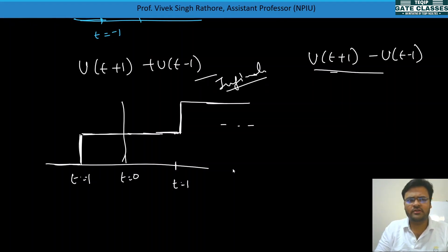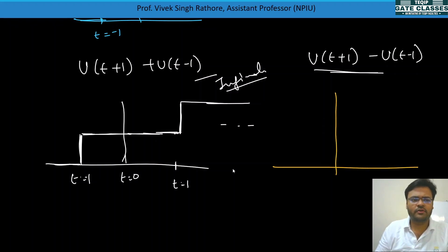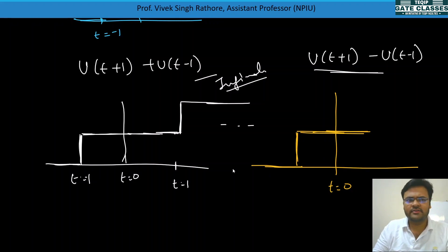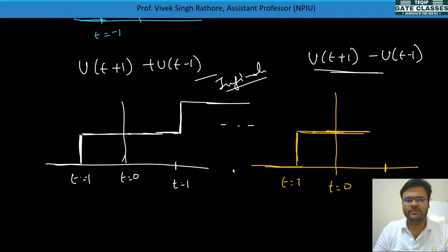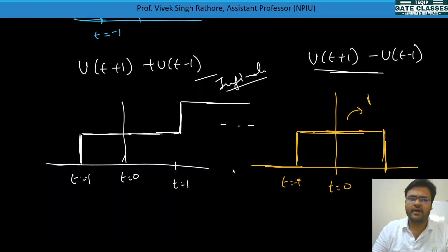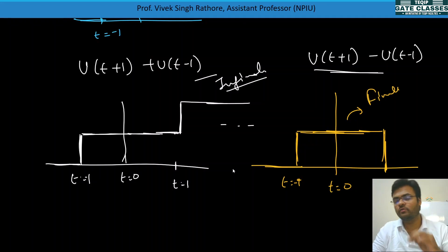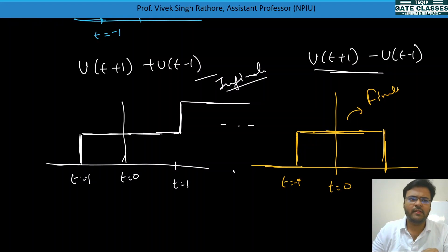Now consider u(t + 1) − u(t − 1). At t = −1 there is a +1 step change, and at t = 1 there is a −1 step change. This produces a finite-duration rectangular or gate pulse, because the amplitudes cancel out.